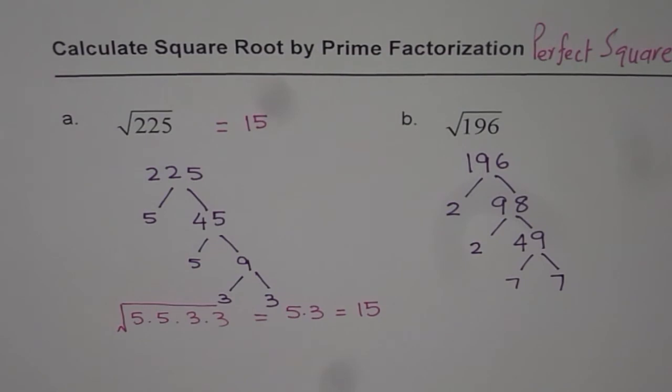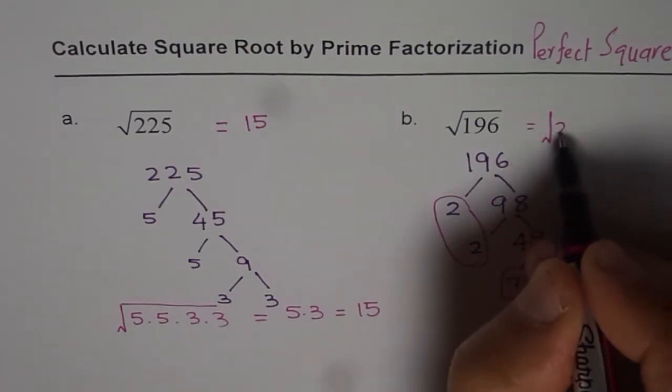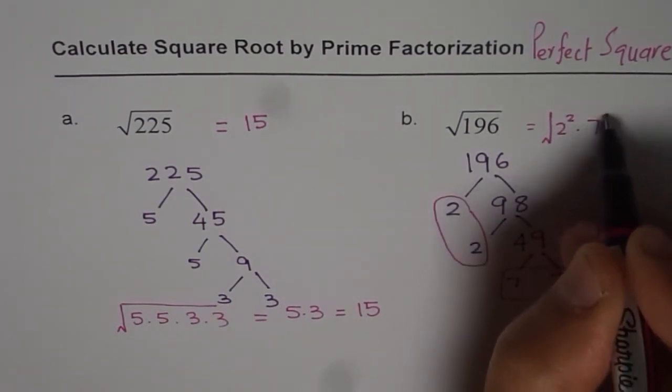7 times 7 is 49. You can see here that we have a set of numbers: 7 times 7 and 2 times 2. Therefore, we can write square root of 196 as square root of 2 squared times 7 squared.